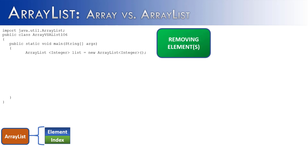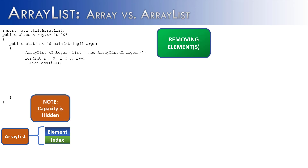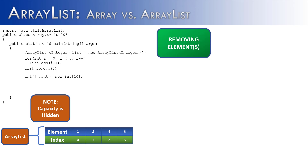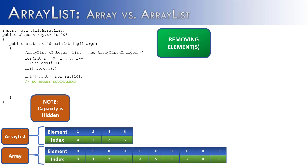What about removing elements? With array lists, I create a list and add elements 1 through 5. I then remove the value at the second index — that's 3 — so 4 and 5 shift over, and yes, we can do it with array lists. If I wanted to do it with an array, unfortunately I can't. There's no built-in way to remove elements from an array. There's a way to do it with code, but we're talking about built-in capabilities.